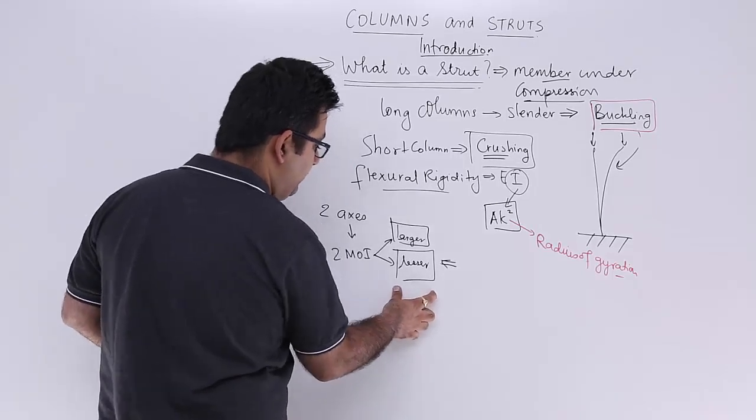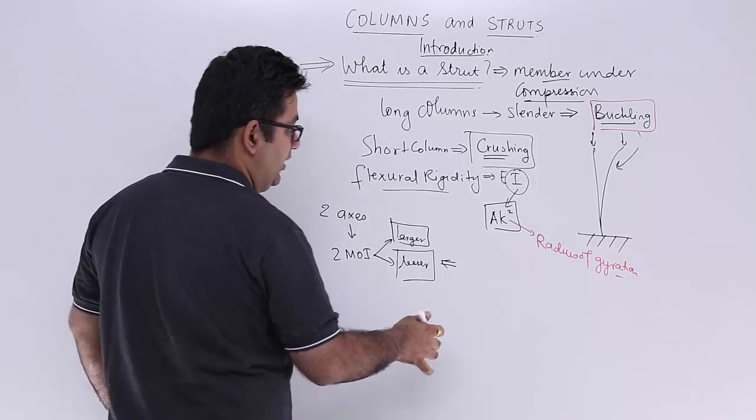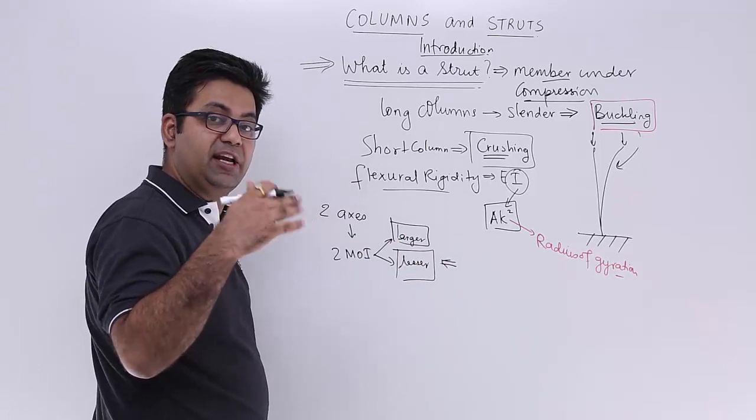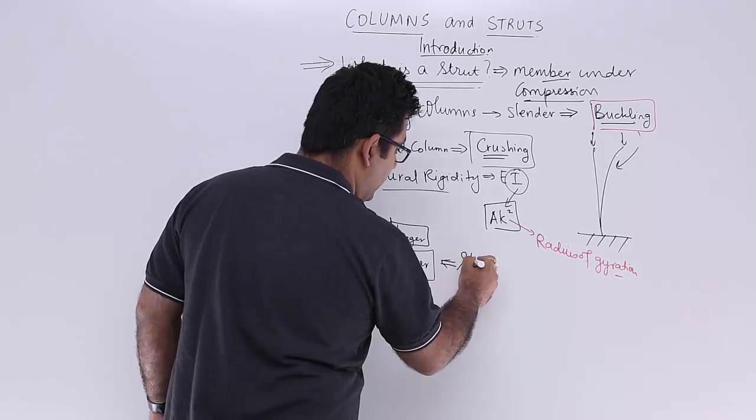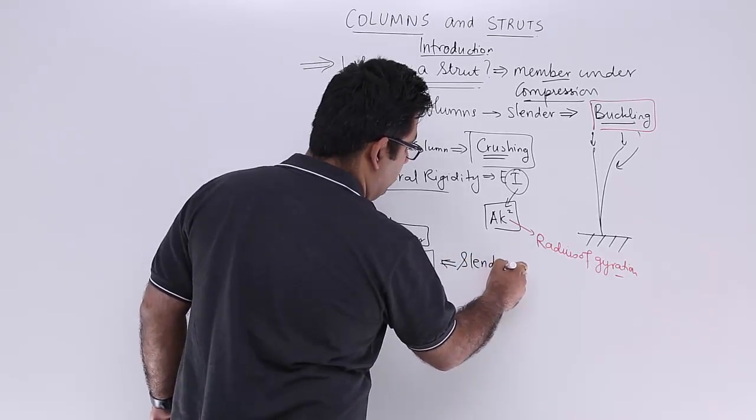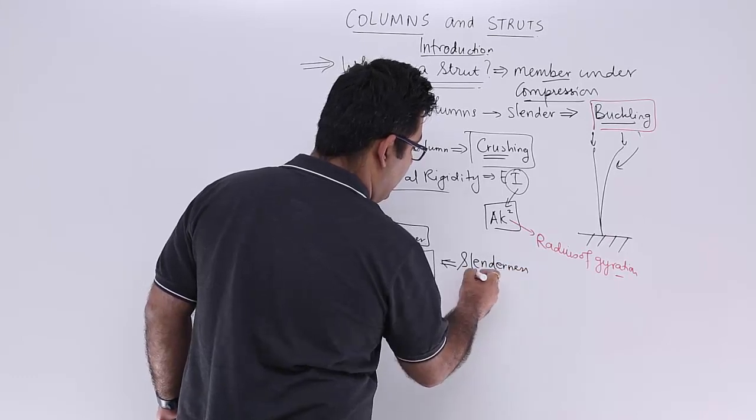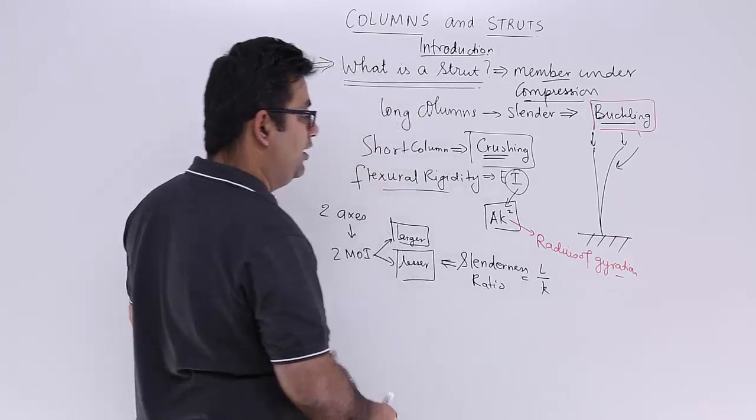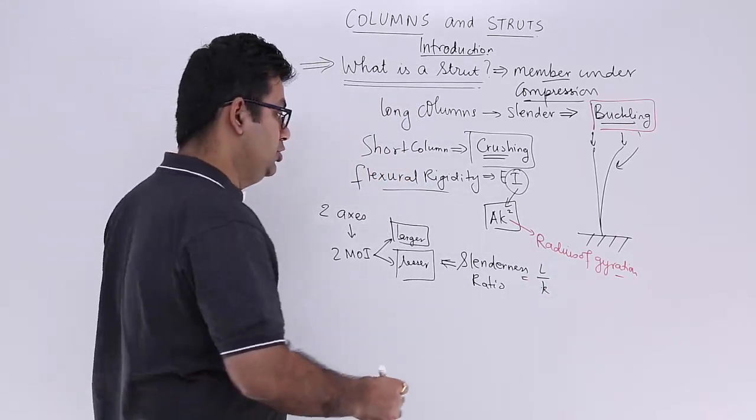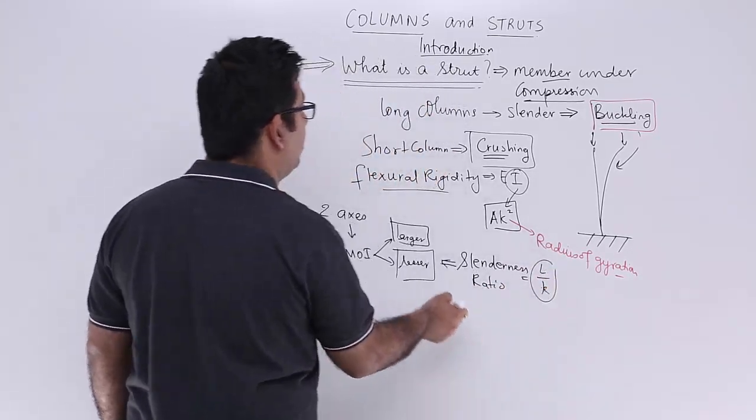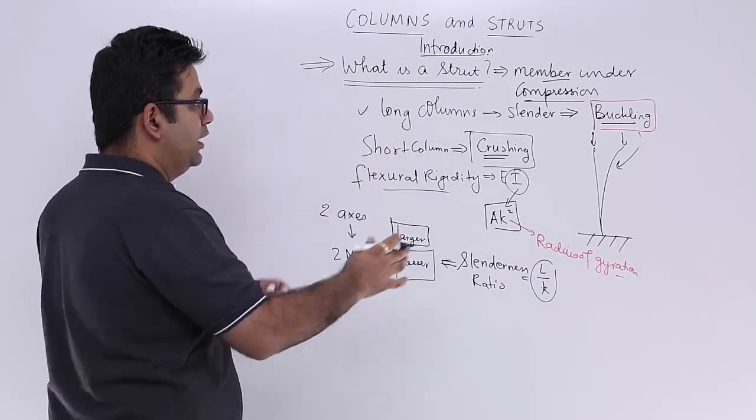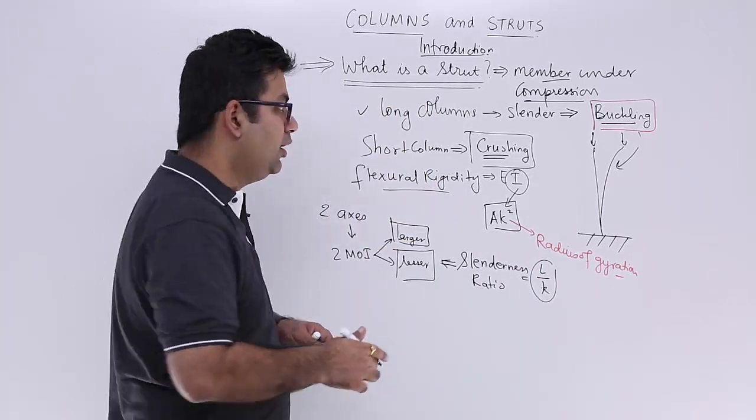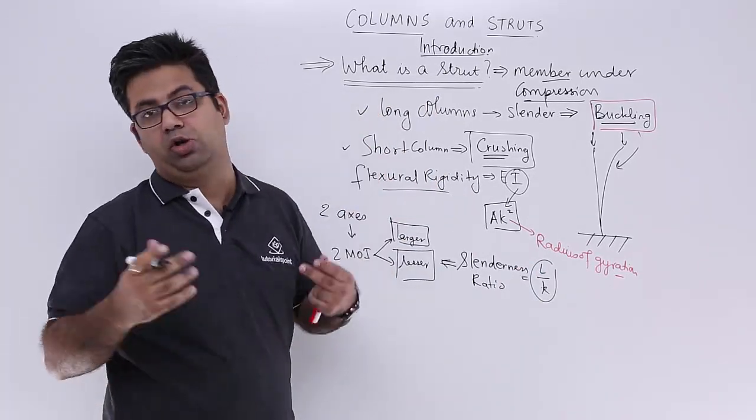As per the lesser moment of inertia, we will now look at a ratio which we call the slenderness ratio. Slenderness ratio is equal to the length by radius of gyration. This will define whether your column lies in the range of long columns or in the range of short columns.